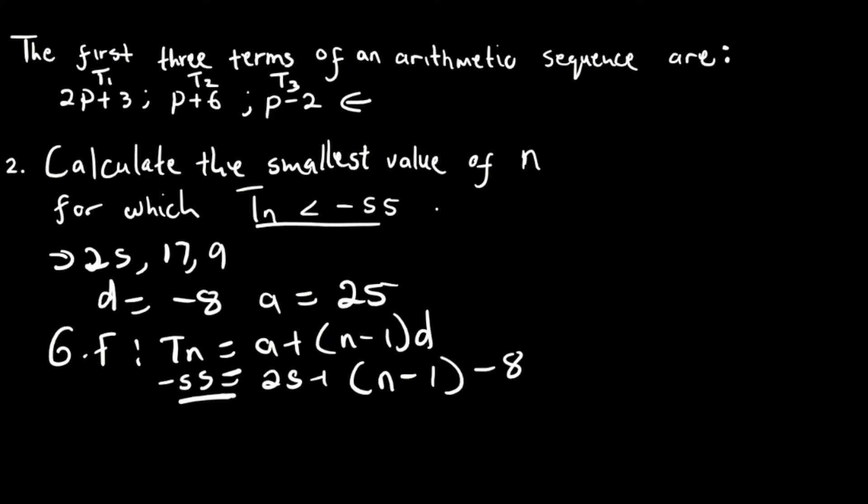So you can just put this part here just here, meaning that you can just rub this off and say less than minus 55. And then, you're going to say 25, plus the minus 8 multiplies the n, it's minus 8n. The minus 8 multiplies the 1, it's positive 8, less than minus 55.